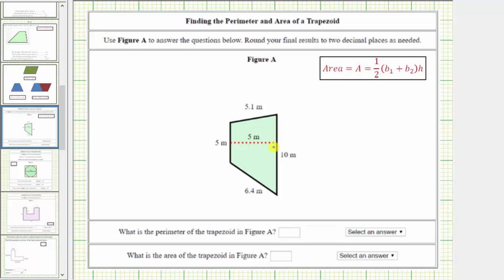We were given a trapezoid and asked to determine the perimeter and the area. The perimeter of any polygon is the distance around the outside of the polygon, and therefore to find the perimeter, we sum the lengths of all of the sides. The perimeter of the trapezoid is equal to 5.1 meters plus 10 meters plus 6.4 meters plus five meters.